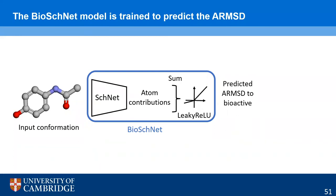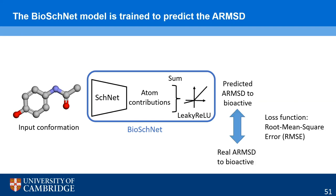To obtain a single value for the conformation with permutation-invariant aggregation, I use the sum. There are newer models that also incorporate angles between atoms and torsion angles — DimeNet, SphereNet, etc. I train the model so that this single value is the deviation to the closest known bioactive conformation, using a simple root mean squared error loss function.